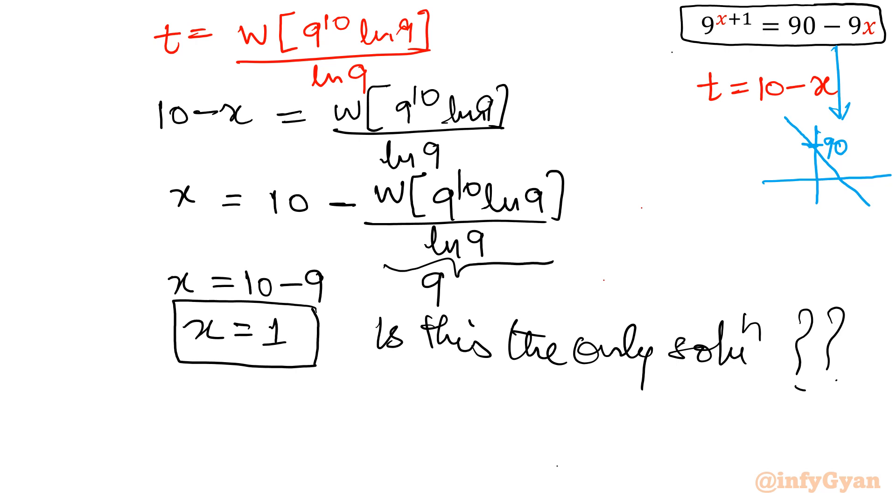Left hand side is exponential function. And e raised to the power x or a raised to the power x form. So it suggests that function would be monotonic increasing. Left hand side function is monotonic increasing. Right hand side function is monotonic decreasing. So there you will get at most one solution, which is x equal to one.